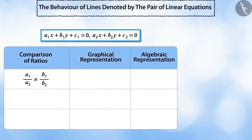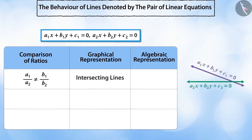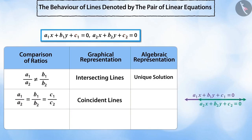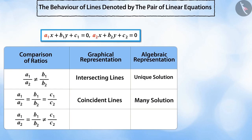If the ratio of the coefficients of x in the pair of equations is not equal to the ratio of coefficients of y, the lines denoted by the pair of equations will be intersecting lines. In this case, the solution to the pair of equations is the unique solution. If the ratio of the coefficients of x, the ratio of the coefficients of y, and the ratio of the constant terms are all equal, then the lines are called coincident. In this case, there are infinite solutions for the pair of linear equations.